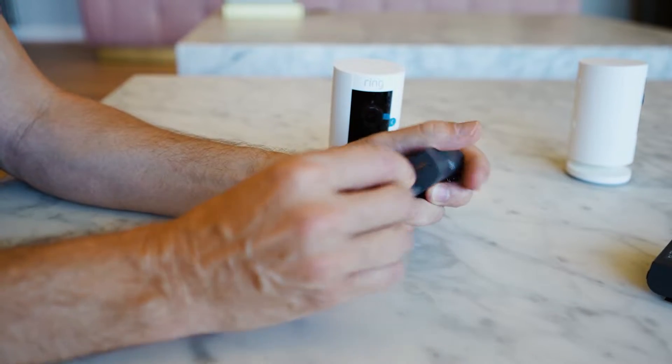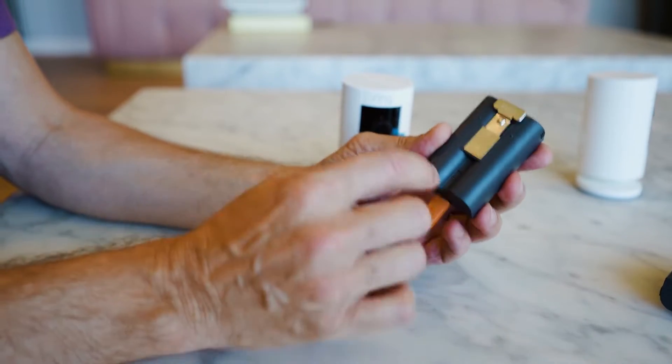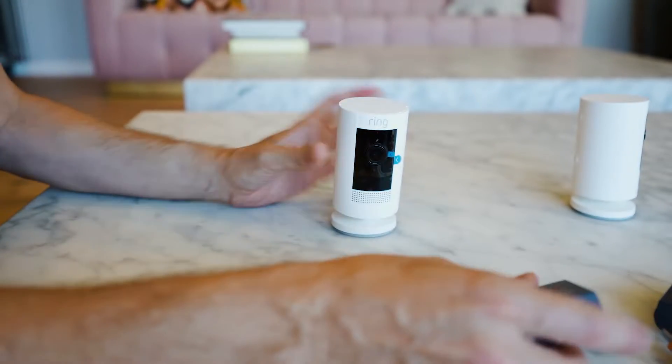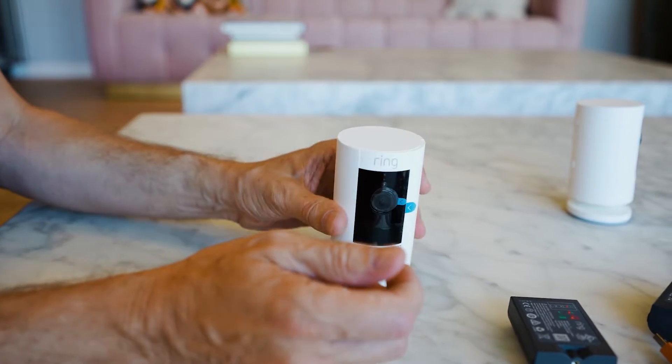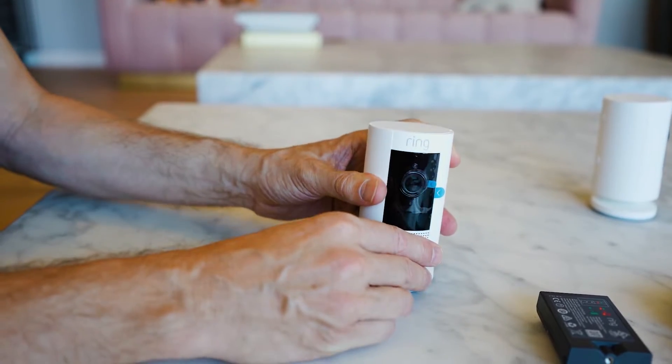You just plug it in like so. It's got a couple lights on it. You let it charge up till one of the lights is fully green. And then you can mount this on a table or your wall. So this is like a table-style mount.